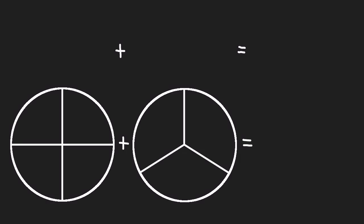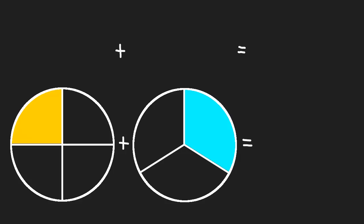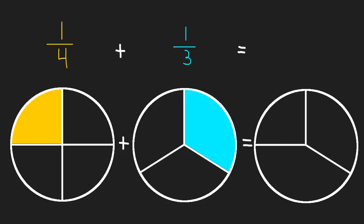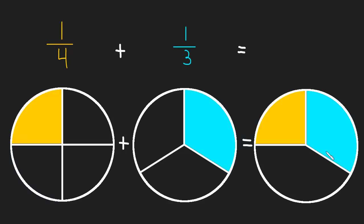What happens if we try and add something like one-fourth to one-third? So I'll write that out. One-fourth plus one-third. Well, visually, it's not too hard to imagine. It's just going to look something like this. That's the total amount we have. But what would that look like as a fraction?